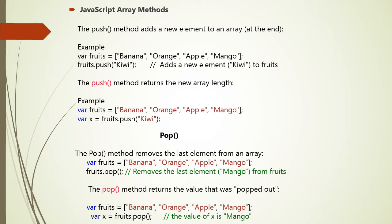Consider various JavaScript array methods. The first is the push method, which adds a new element to the end of the array. For example, with fruits = ['banana', 'orange', 'apple', 'mango'], fruits.push('kiwi') adds kiwi to the array. The push method also returns the new array length. For example, if we say let x = fruits.push('kiwi'), x will return 5, because previously there were four elements and now we have added one.